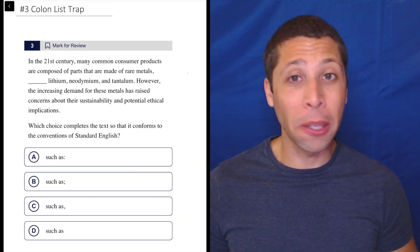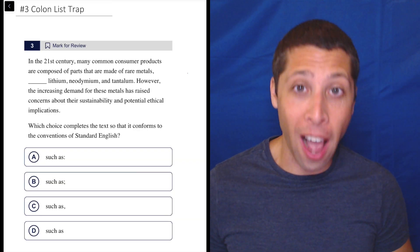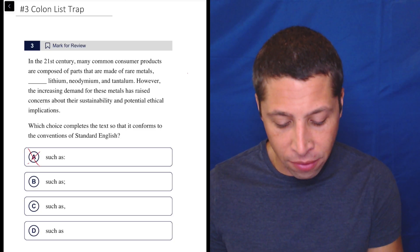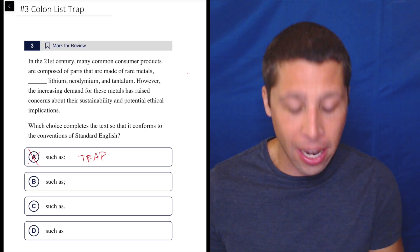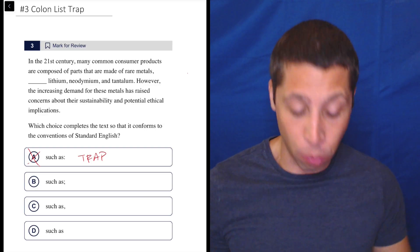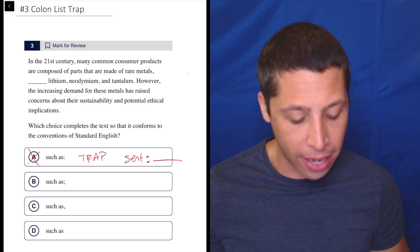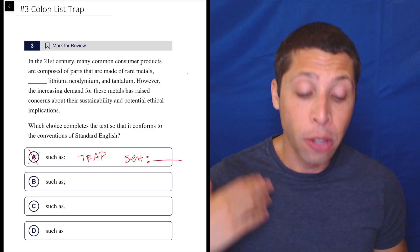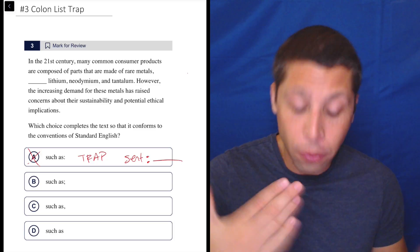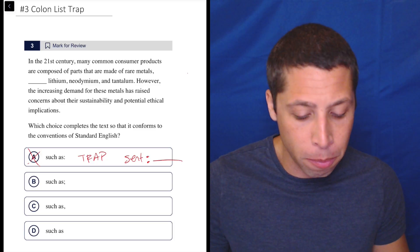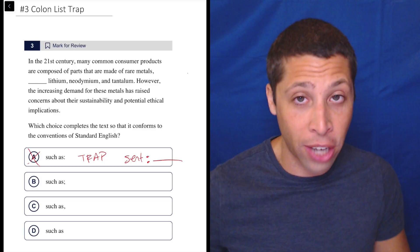If you've watched any of my grammar videos, you've probably heard me say at some point that colons are not for lists. That is not a real rule. I don't know why everyone knows it. So choice A is very clearly a trap that the SAT has set up knowing that you know this fake rule. The actual rule for colons is that we need to have a complete sentence beforehand, and then we have some flexibility after. So it's easy to show why choice A is wrong if you just know the real rule. In the 21st century, many common consumer products are composed of parts that are made of rare metals, such as... Can we put a period there? No, we can't. The sentence isn't over. We can hear that.